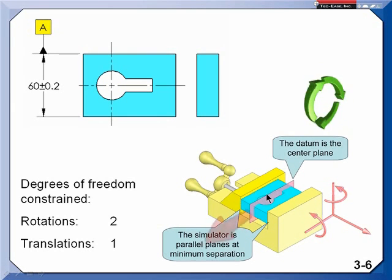And I have two translations remaining. It can move left, right, and it could move up, down in that vise. We started with three. Two are remaining, so I must have arrested or taken away one translation.